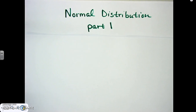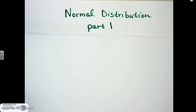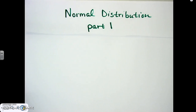Hello everybody, we are close to the end of this semester and close to the end of this class, so we only have a few more things to deal with. Normal distribution is one of those things. We're going to call this normal distribution part one, because this part is what you need to understand before you can do the normal distribution itself. We'll do part two later on.